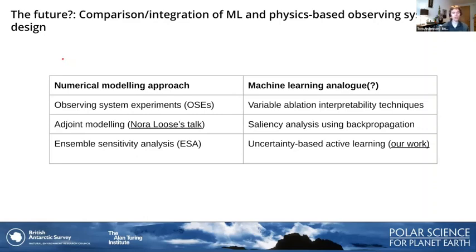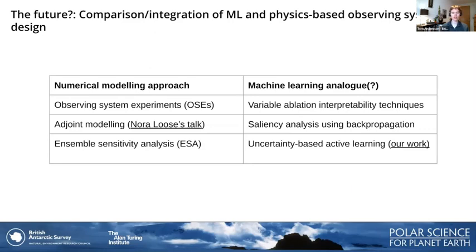As part of my literature review, I found interesting analogues between numerical or physics-based sensor placement and observing system design approaches, and machine learning approaches from either the interpretability or uncertainty quantification and active learning side of things. One worth highlighting is adjoint modeling, which Nora Lusa gave a talk on in a previous SUSOSD mini-workshop. Our work lies in a particular position in this table, and in the interest of time we can come back to this in the discussion.